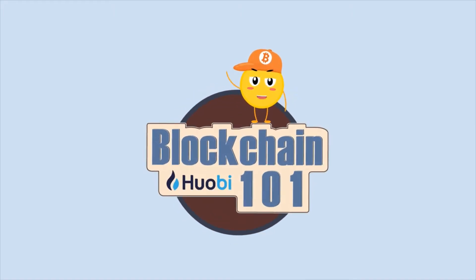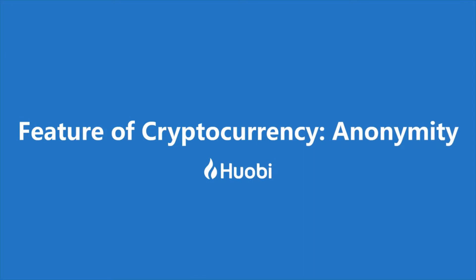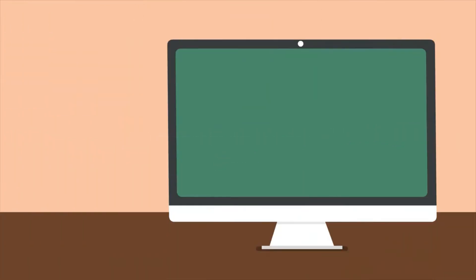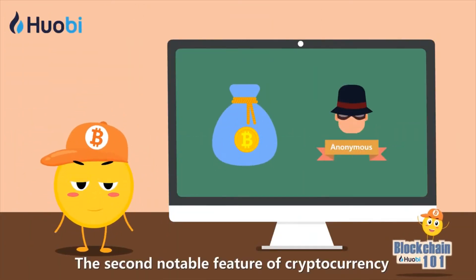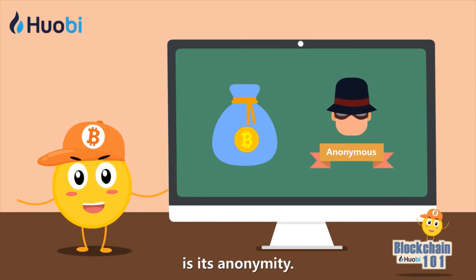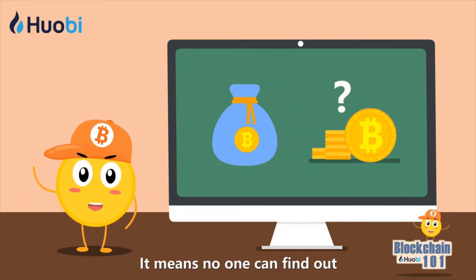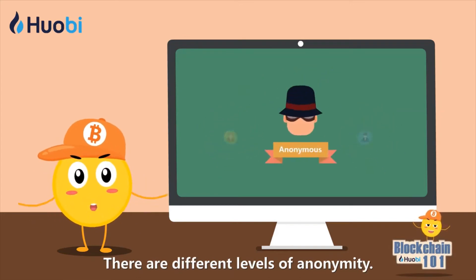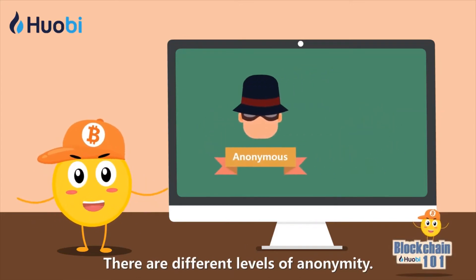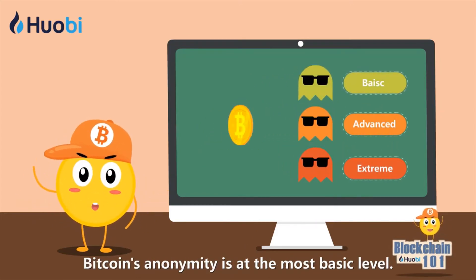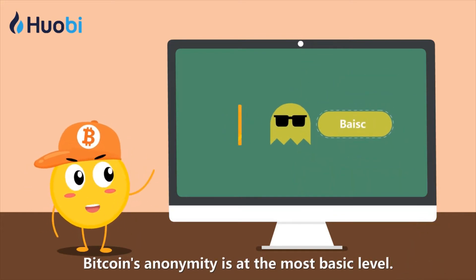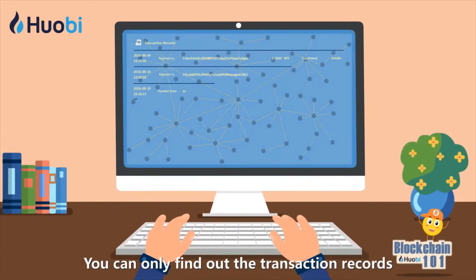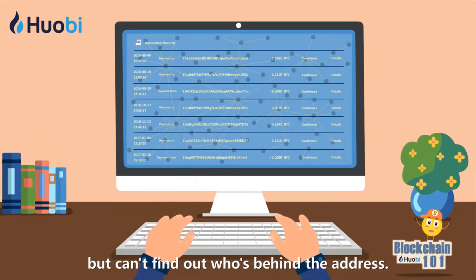One Minute a Day: Blockchain 101 — Feature of Cryptocurrency: Anonymity. The second notable feature of cryptocurrency is its anonymity. It means no one can find out how much assets you have or who you are transacting with. There are different levels of anonymity. Bitcoin's anonymity is at the most basic level — you can only find out the transaction records on the blockchain, but can't find out who's behind the address.